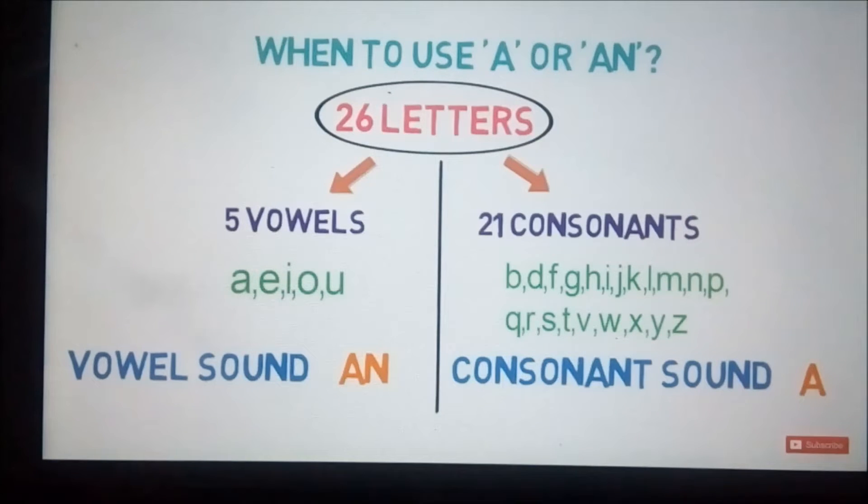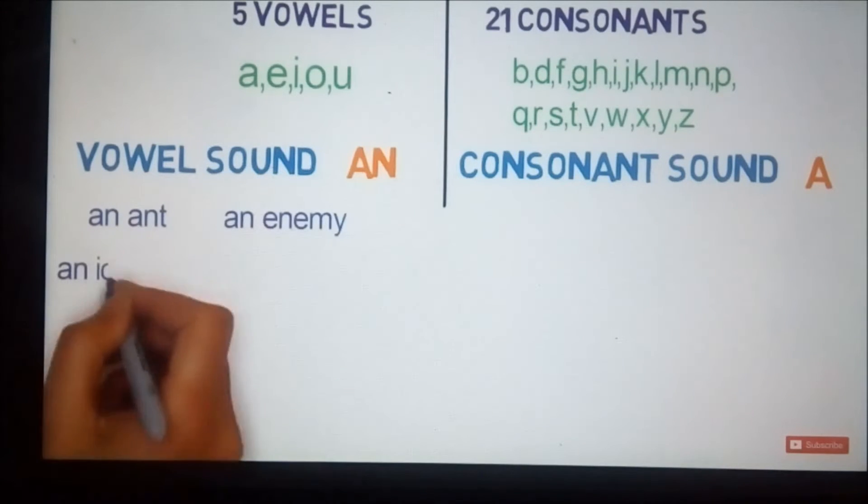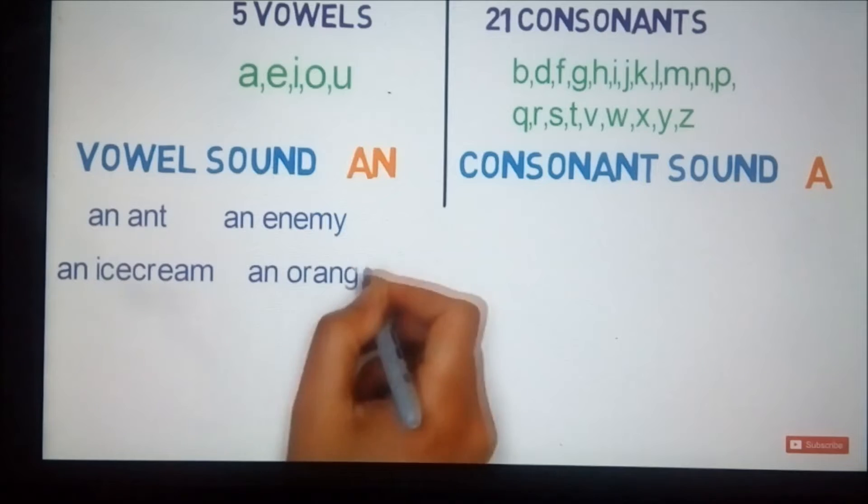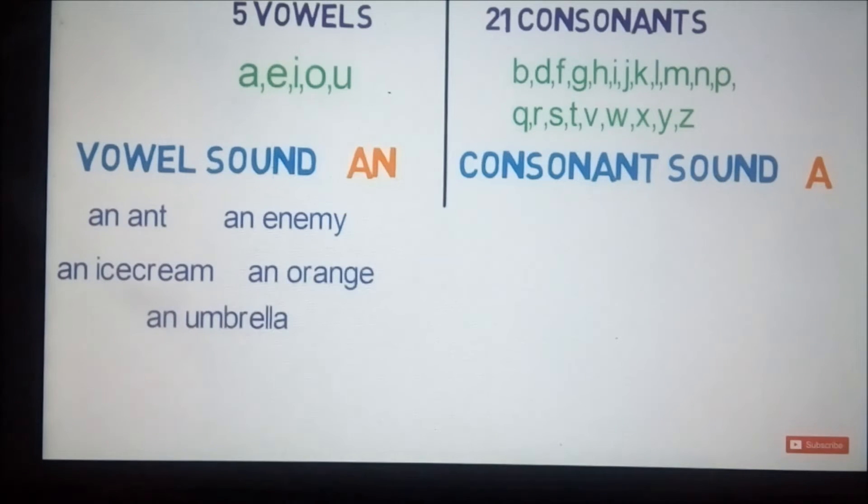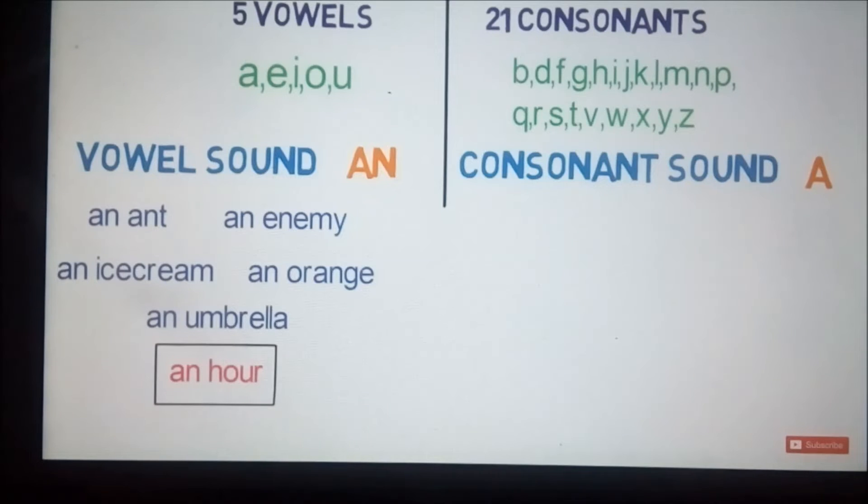Let's look into examples where we use 'an' before a word: an ant, an enemy, an ice cream, an orange, an umbrella, an hour. Notice the word 'hour'. As 'h' is silent here, 'hour' starts with a vowel sound. So 'an' is used before the word 'hour'.